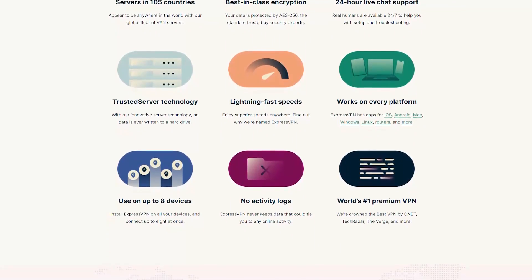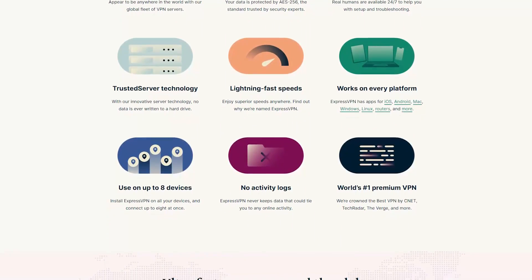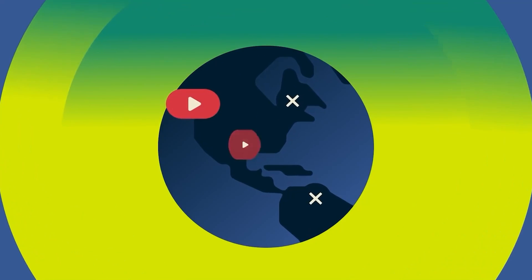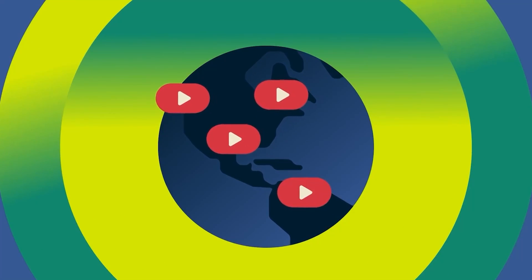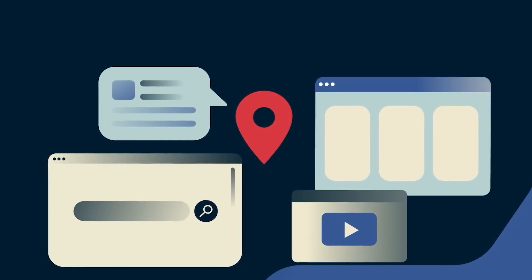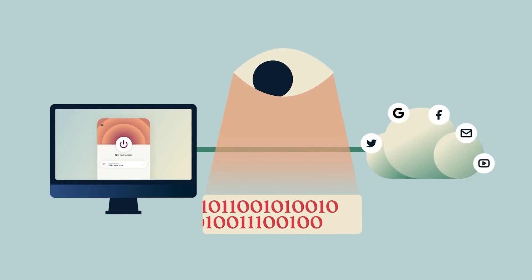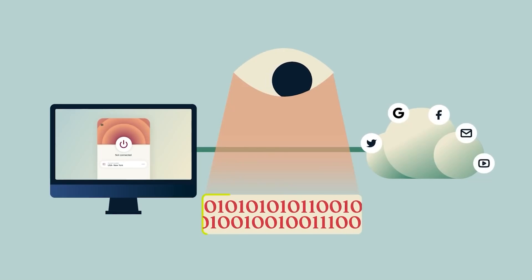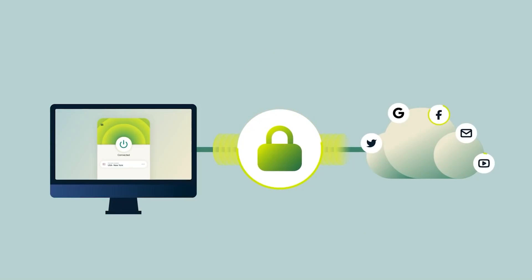Connecting to the VPN is actually quite simple. All you're going to have to do is launch and connect to a server. Your internet traffic will immediately be secured with military-grade encryption, leak protection, and a kill switch. None of your online activity will ever be logged, shared, or sold to third parties.